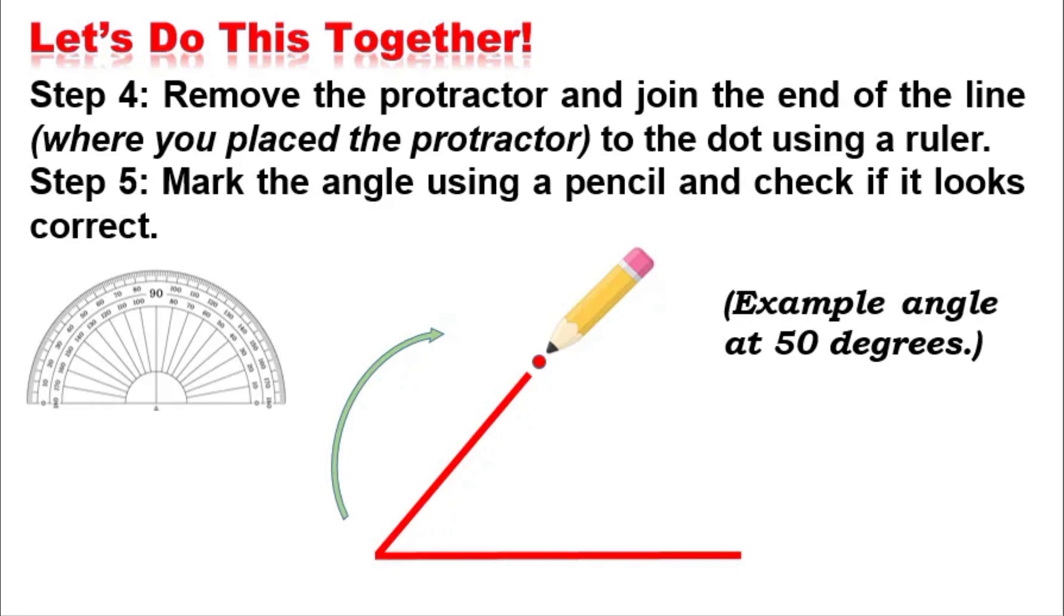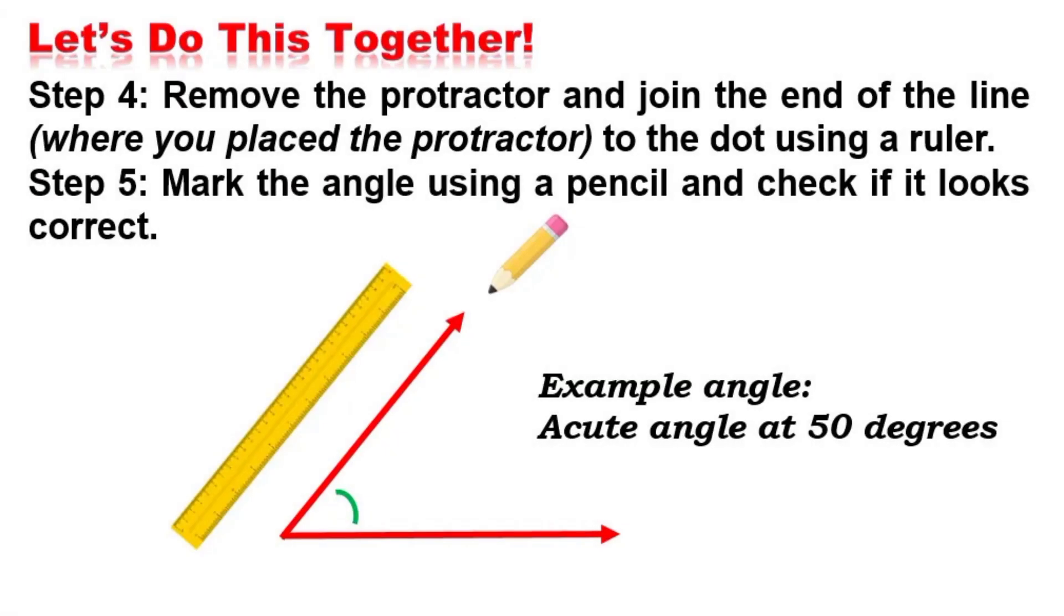Next step. Remove the protractor and join the end of the line where you placed the protractor to the dot using a ruler.